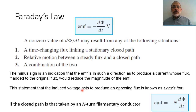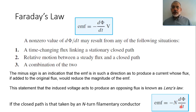Now, if we are talking about an N-turn circuit, the flux linkage will not be only Φ — it could be NΦ. So, in the case of an N-turn circuit, the induced electromagnetic force would be minus N multiplied by the rate of change of the flux with respect to time: EMF = -N dΦ/dt.